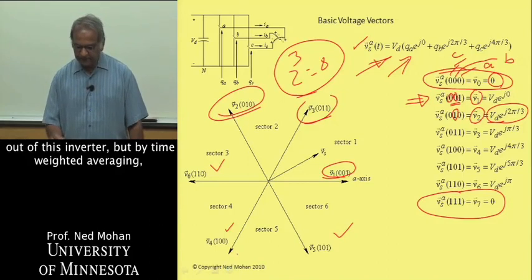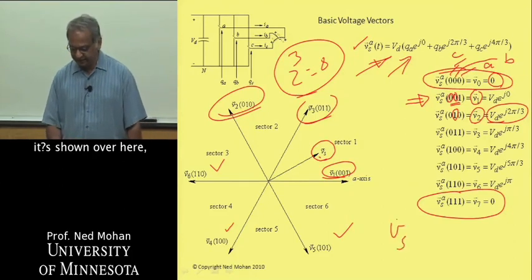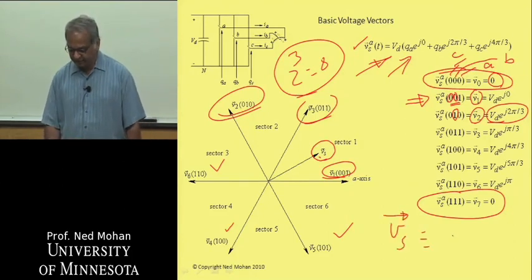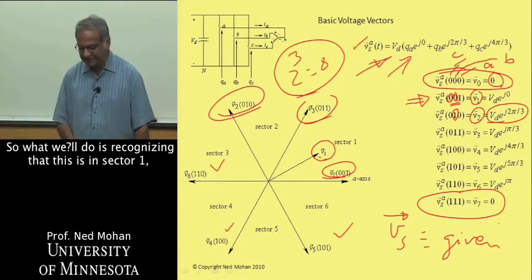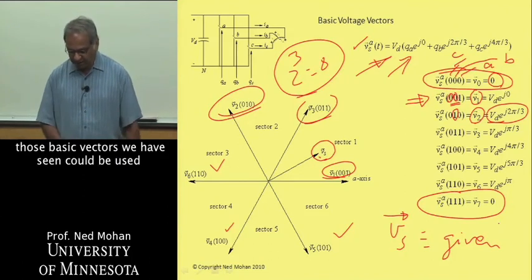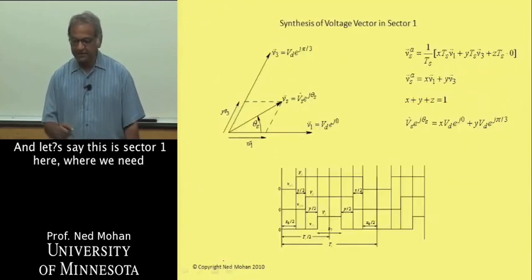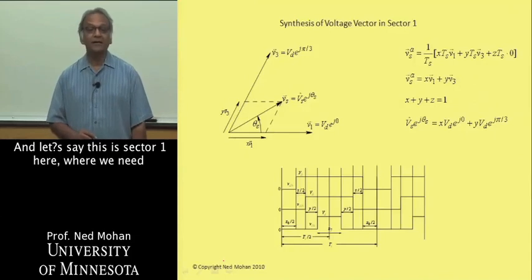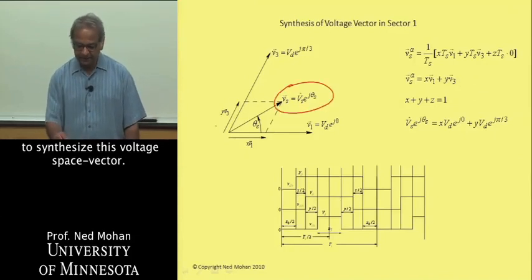If you are given some voltage that we have to synthesize, V sub S, let's say is given, we need to synthesize this. We can use these basic vectors to synthesize that, because there's nothing more that we can get out of this inverter. But by time-weighted averaging, as it's shown over here, we will synthesize this desired voltage vector here.